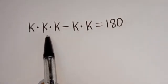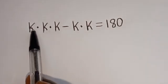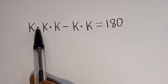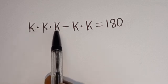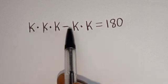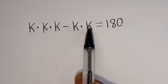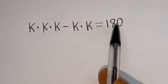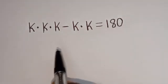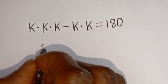Hello. How to solve for k in this equation: k multiplied by k multiplied by k, minus k multiplied by k, is equal to 180. Solution.